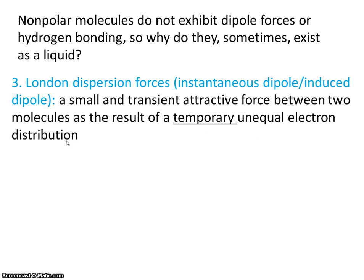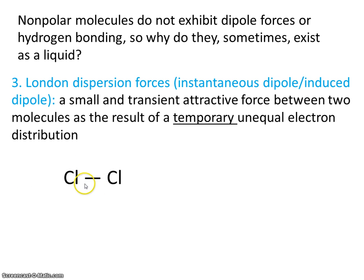There was a whole lot there, but let's try to break that down. Let's look at a molecule of chlorine. Chlorine is very nonpolar, which means that the two electrons here are shared equally between the two chlorine atoms.